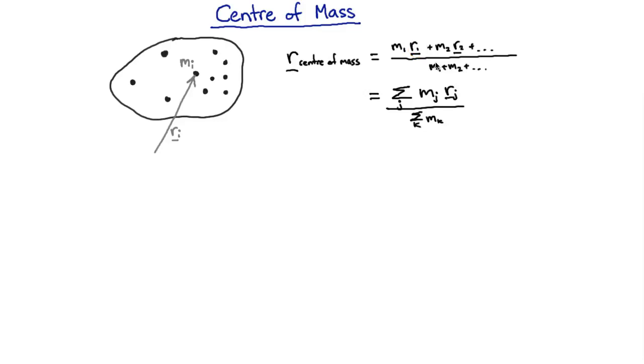We know that if we have just one particle, so if we can cross out all these extra terms from the sum, it's just the mass times the position divided by the mass, so it's just the normal position.